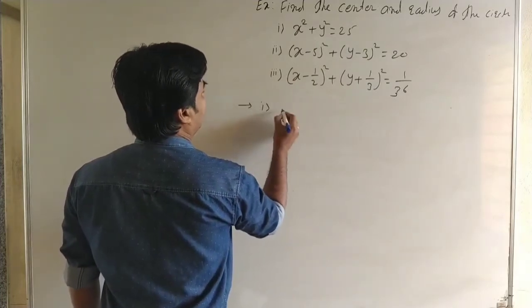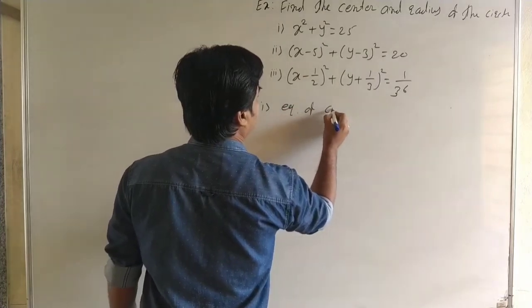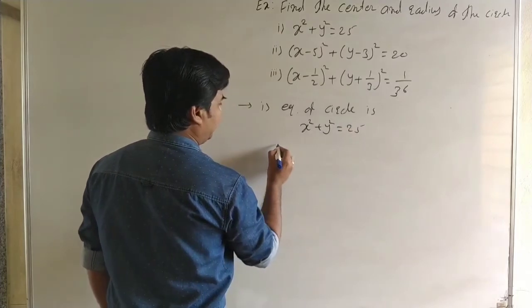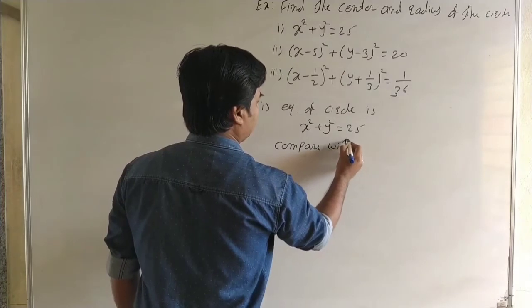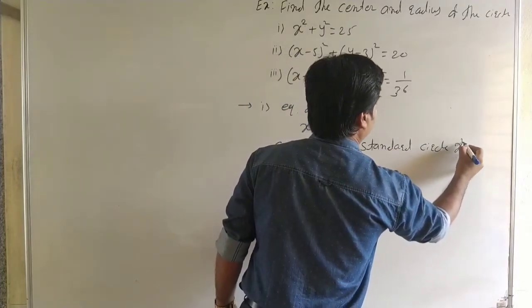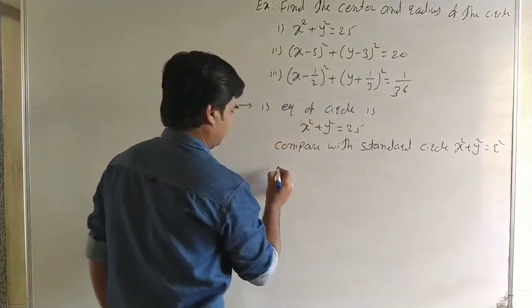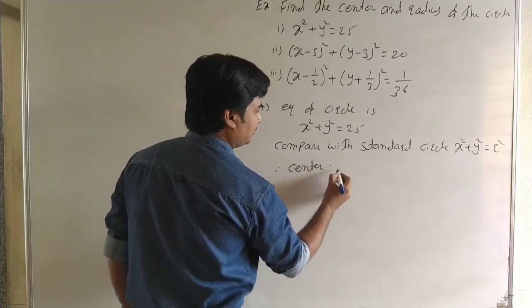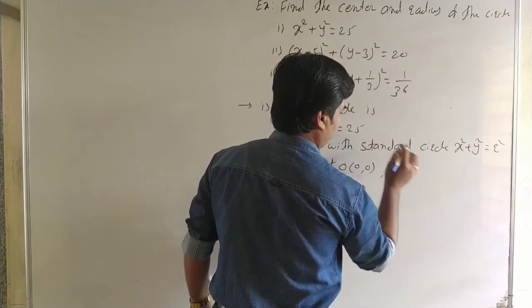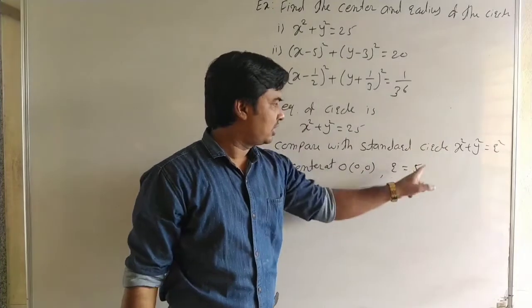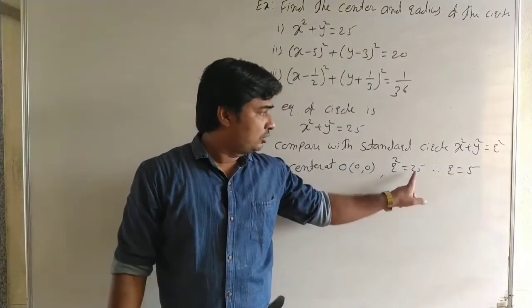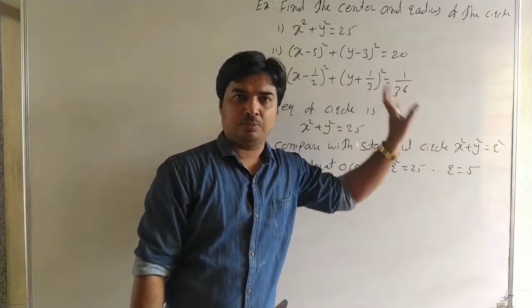For the first example, given equation x² + y² = 25. Comparing with standard circle x² + y² = r², center is at origin (0, 0). Since r² = 25, r = 5. Radius is positive as it represents a distance, so r = 5.